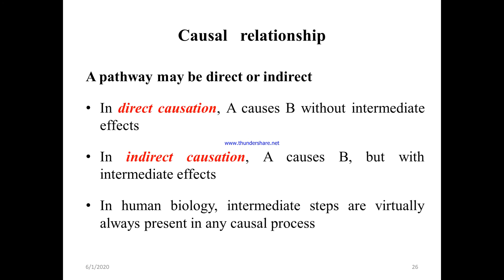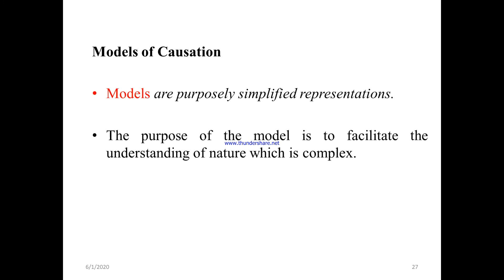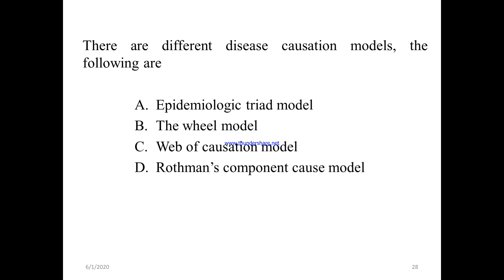The causal pathway may be direct or indirect. Direct causation: A causes B without an intermediate effect. Indirect causation: A causes B but with an intermediate effect. In human biology, intermediate steps are virtually always present in many causal processes. Models of causation include the epidemiological triad model, the wheel model, the web of causation model, and Rothman's component cause model.